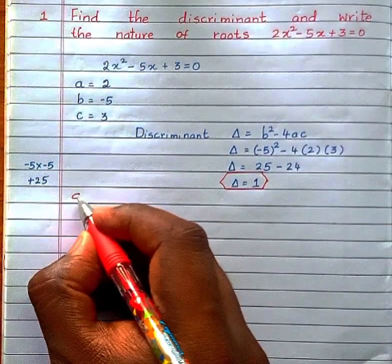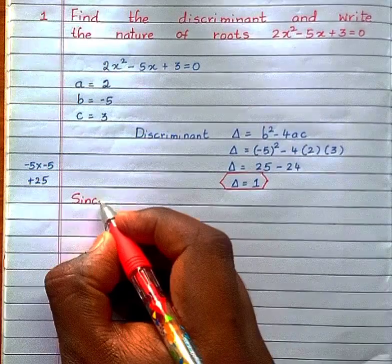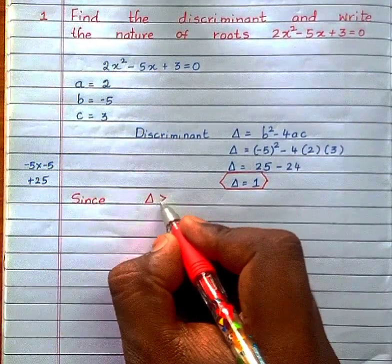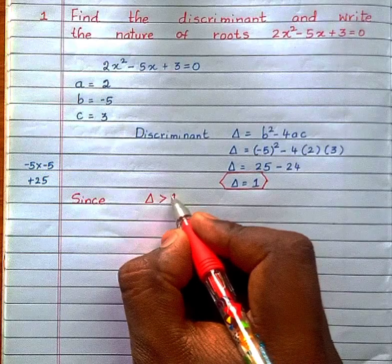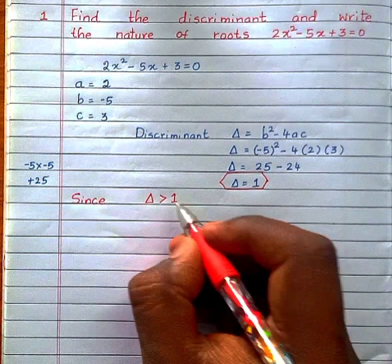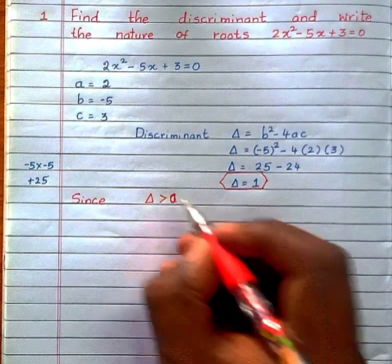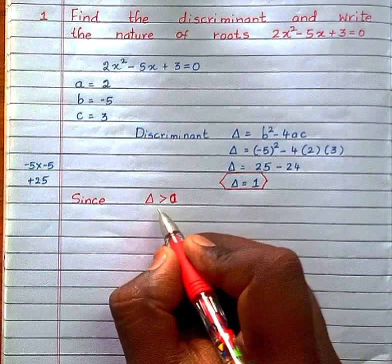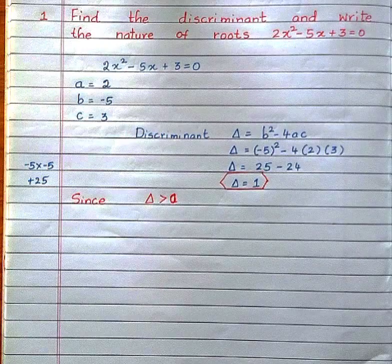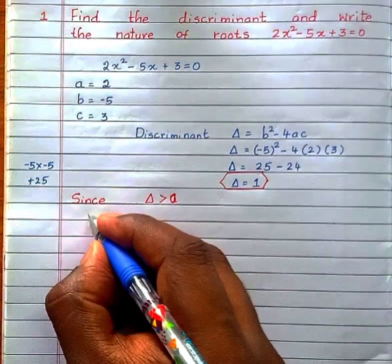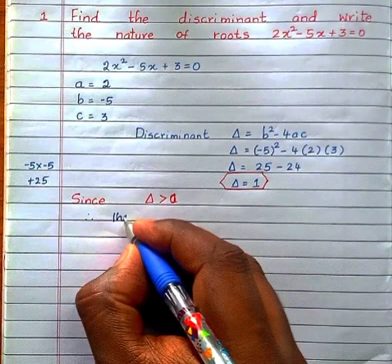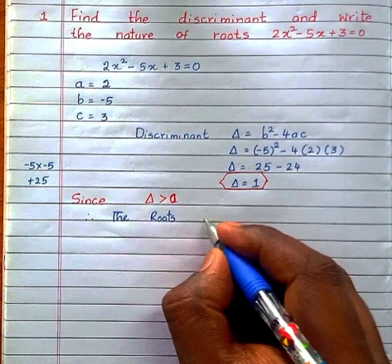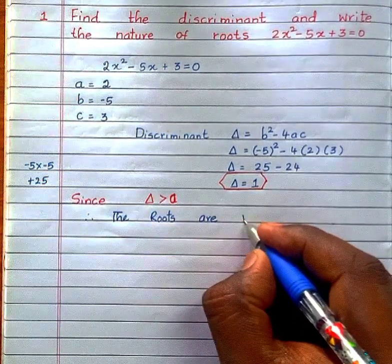Since the value of Δ or discriminant is greater than 0, that means the roots are real and distinct. Since discriminant is greater than 0, the roots are real and distinct.